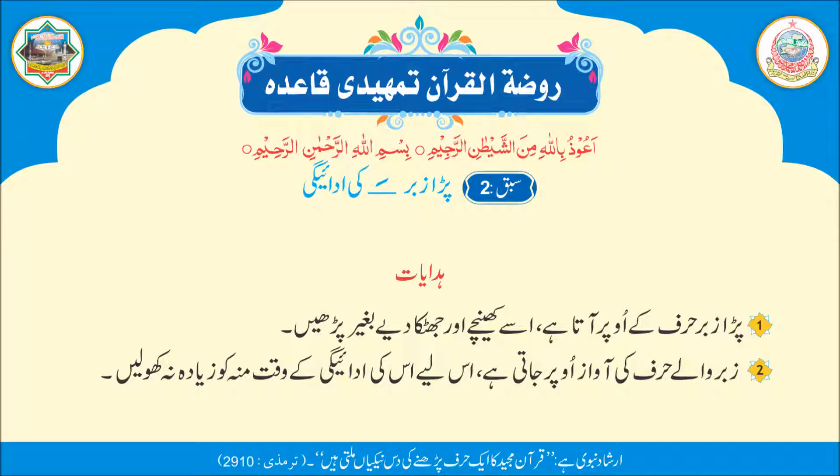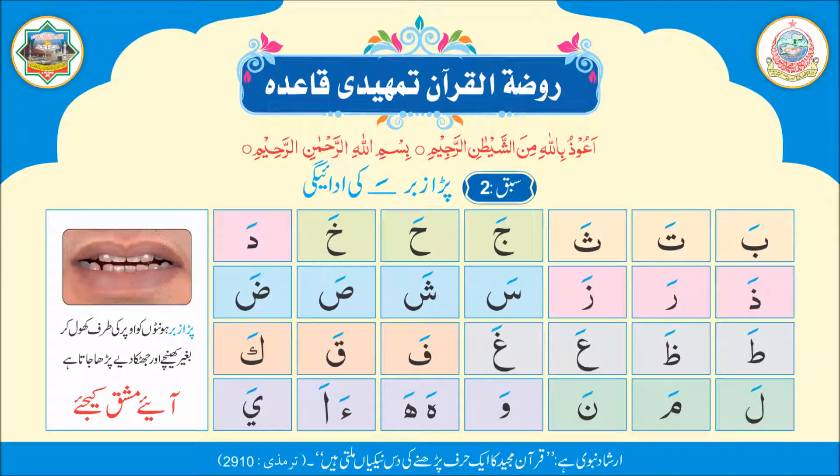سبق نمبر دو: پڑا زبر۔ ہدایات نمبر ایک: پڑا زبر حرف کے اوپر آتا ہے — اسے کھینچے اور جھٹکا دیئے بغیر پڑھیں۔ نمبر دو: زبر والے حرف کی آواز اوپر جاتی ہے، اس لئے اس کی ادائیگی کے وقت منہ کو زیادہ نہ کھولیں۔ پڑا زبر ہونٹوں کو اوپر کی طرف کھول کر بغیر کھینچے اور جھٹکا دیئے پڑھا جاتا ہے۔ آئیے مشق کیجئے۔